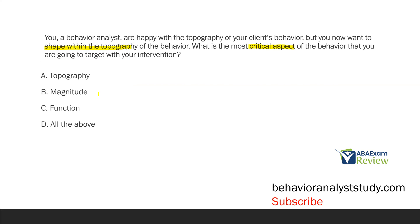What we need to change is B, the magnitude. When you shape within, you're looking at the magnitude of the behavior — maybe slower, faster, harder, softer, louder, or quieter. Some sort of magnitude of behavior. What about function? We're not shaping to change the function of behavior. With shaping, we're looking at approximations and aspects of the behavior. Since we have the topography we want, we now need to change that magnitude. So when we shape within topography, we're looking at typically the magnitude.